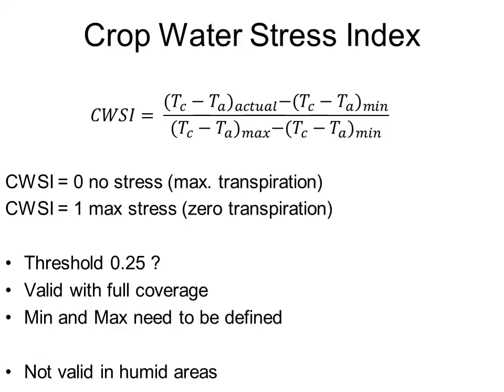Using canopy temperature, we can produce different indexes, and the most widely used is the Crop Water Stress Index (CWSI). It is calculated using the difference between canopy temperature (Tc) and air temperature (Ta). We measure the actual Tc minus Ta, and we also need to know the minimum value and maximum value of that variable.